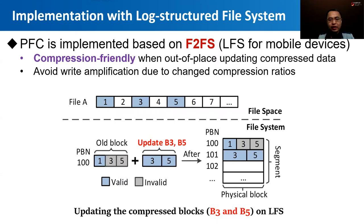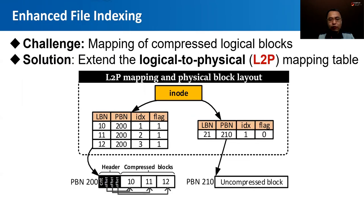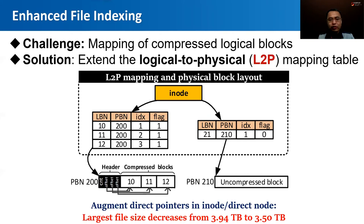Our proposed FPC is implemented based on F2FS, a log-structured file system for mobile devices. By employing the append-only update manner, compression with F2FS can avoid the write amplification problem during data updates. Since we store multiple file blocks in one physical block, a sub-block level mapping is needed. To this end, we extended the direct pointers in F2FS inode and direct nodes to index a compressed file block. Since the number of original direct pointers was reduced, our design slightly reduces the largest file size, though it remains reasonably large for files on mobile systems.